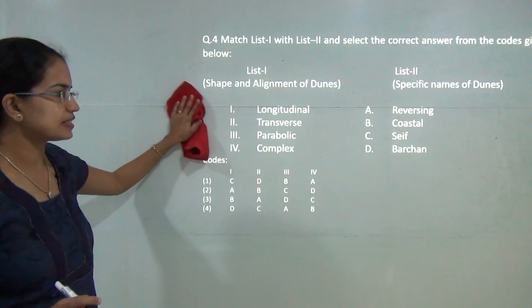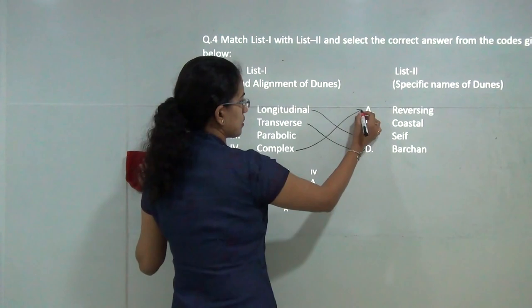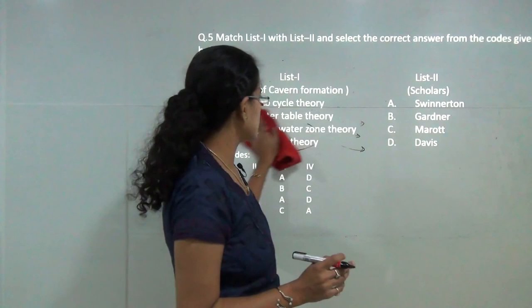The next question is you have to match the type of dunes with their specific names. So longitudinal dunes are known by the name of seif, then you have barkans which are the transverse dunes. You have reversing dunes which are complex in nature and parabolic dunes are coastal in nature and they are also known as u-shaped or parabolic.